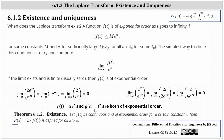Now let's try g of t equals t squared. We have the limit as t approaches infinity of t squared divided by e to the two t. The limit is in the indeterminate form of infinity divided by infinity, so we apply L'Hôpital's rule, giving us the limit of two t divided by two e to the two t — still indeterminate. Applying L'Hôpital's rule again gives us the limit of two divided by four e to the two t, which equals zero. Therefore, g of t equals t squared is also of exponential order.